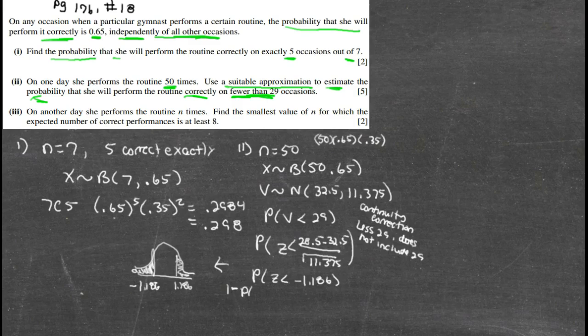Well, that's going to be one minus the probability of z being less than 1.186. Go to the table, find the probability of 1.186 is 0.8822, subtract it from one, and you get that answer.